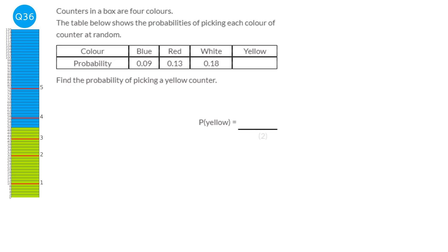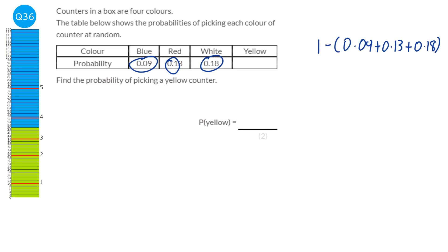All probabilities have to add up to 1. So we take away these probabilities from 1: 1 take away 0.09 plus 0.13 plus 0.18, which is 0.4. 1 take away 0.4 is 0.6.